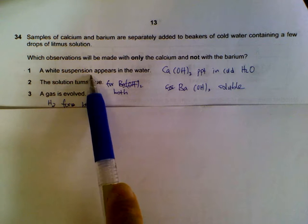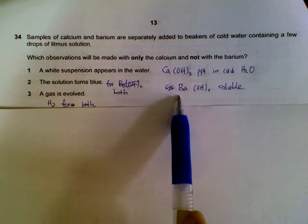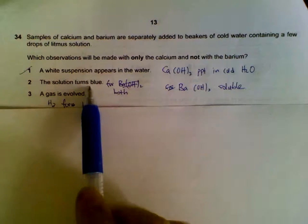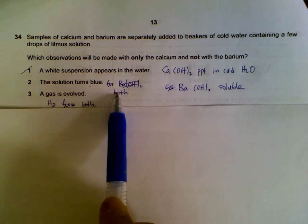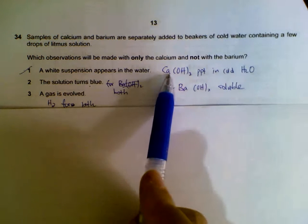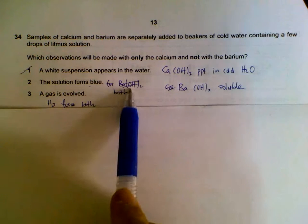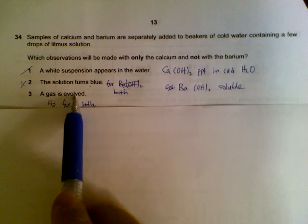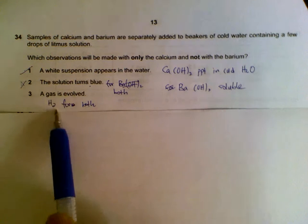So you will see a white precipitate for calcium hydroxide, but not for barium hydroxide. The solution turns blue for both of them because of the hydroxides formed. Part of calcium hydroxide still dissolves and will turn the solution alkaline. The gas will be evolved for both of them. We will get hydrogen gas.